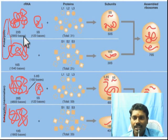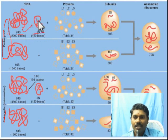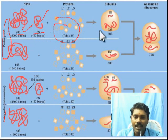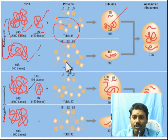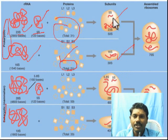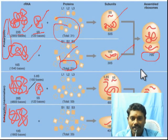In prokaryotes, the 50S subunit contains 5S rRNA and 23S rRNA, along with 31 proteins, while the 30S subunit contains 16S rRNA and 21 proteins. Both subunits together form the prokaryotic 70S ribosome.